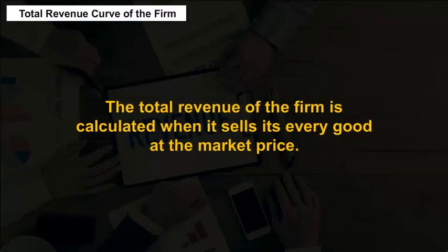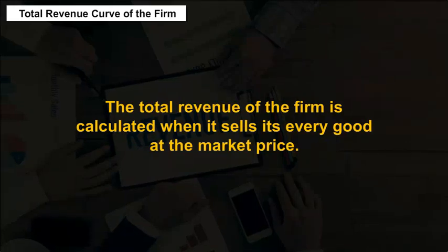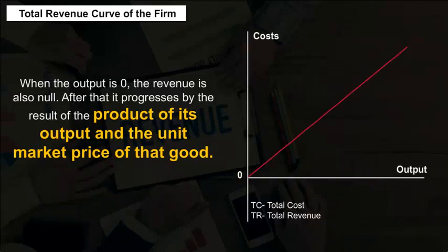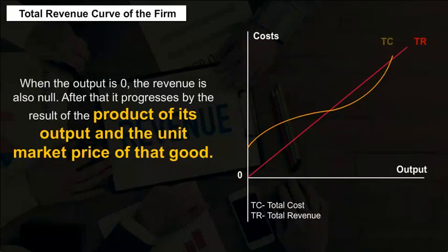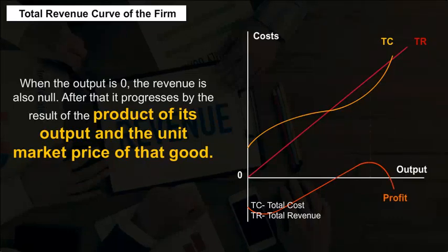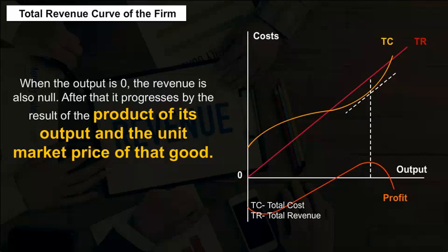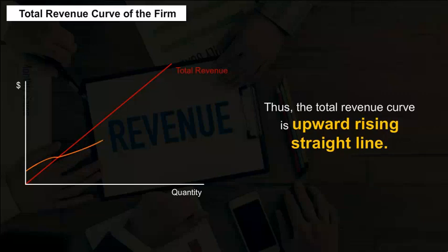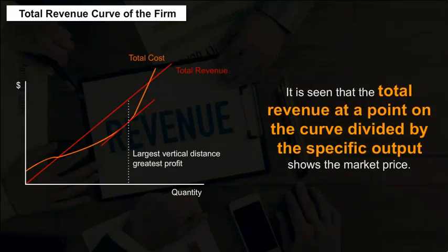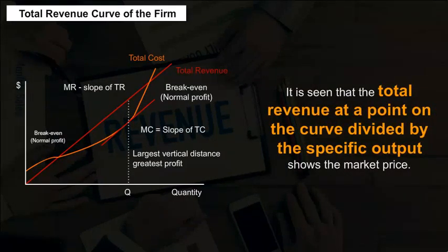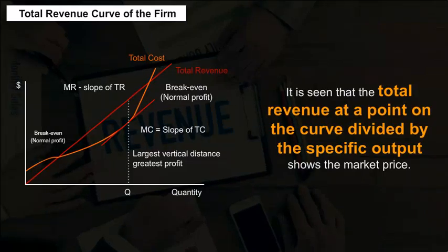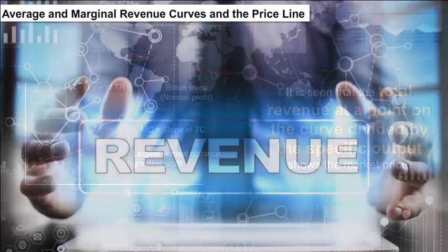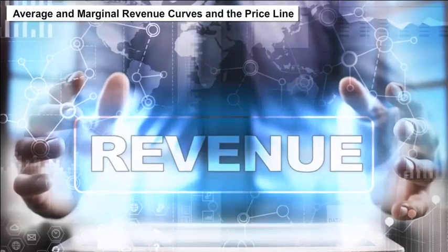Total Revenue Curve of the Firm. The total revenue of the firm is calculated when it sells every good at the market price. When the output is zero, the revenue is also null. After that, it progresses as the product of its output and the unit market price of that good. Thus, the total revenue curve is an upward-rising straight line. The total revenue at a point on the curve divided by the specific output shows the market price.